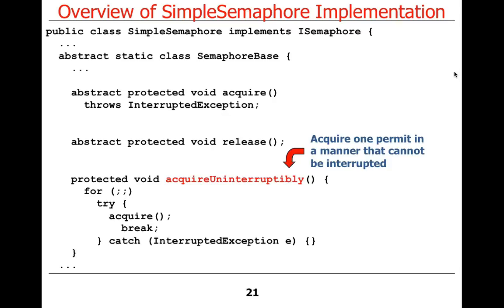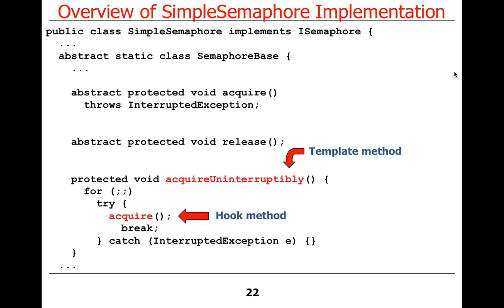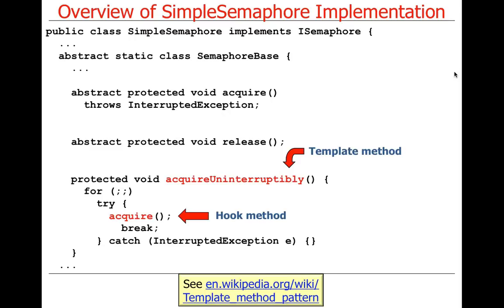So what pattern are we implementing here? Here's a method that has a fixed algorithm and it leaves the implementation of one of the steps to a subclass. Template method! Very good. 20 points to Gryffindor. So yes, it's template method — this is a template method, and there's the hook method. That's the template method pattern. You'll see that gets used a lot.